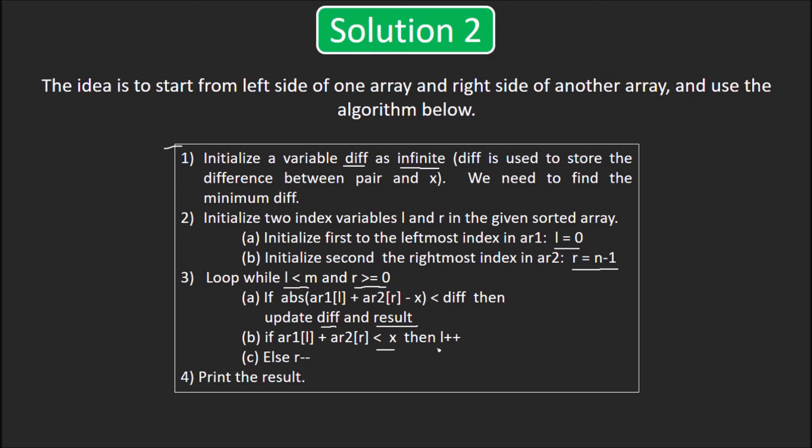Now, check if the sum of the two elements at lth and rth position was less than x. If so, then do l++. That is, move l to the next position of ar1 and in case the sum was more than x, then we do r--. That is, we move r to the previous index of ar2. When the loop ends, we print the result.